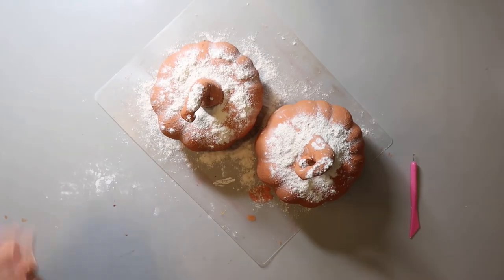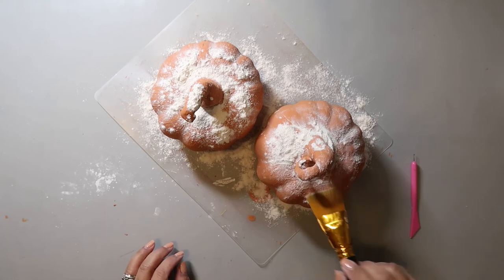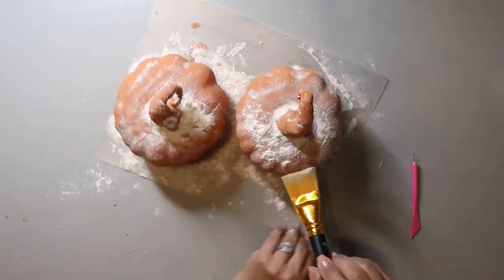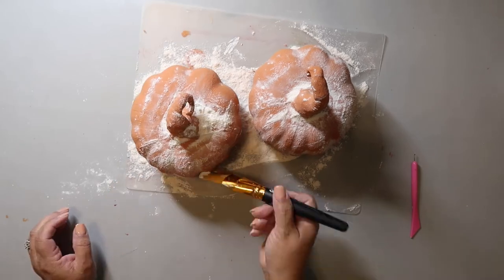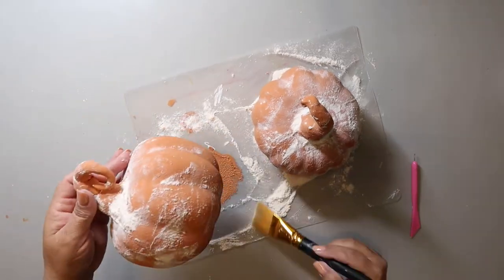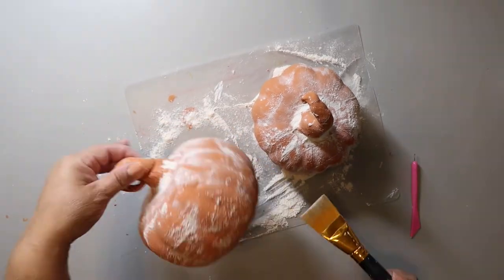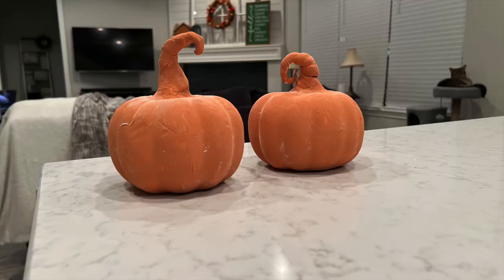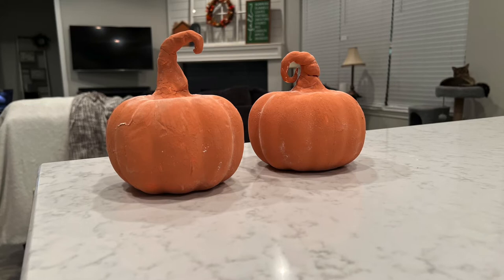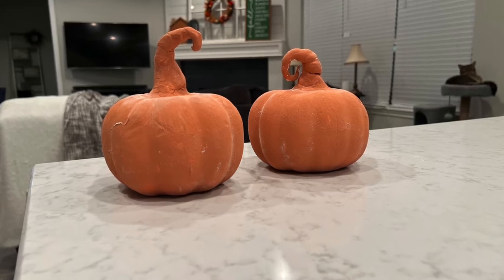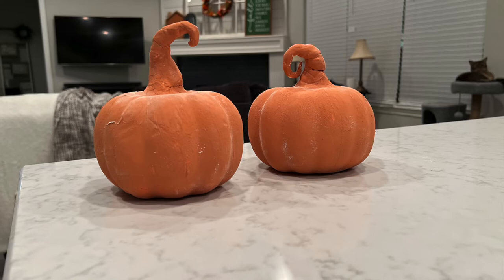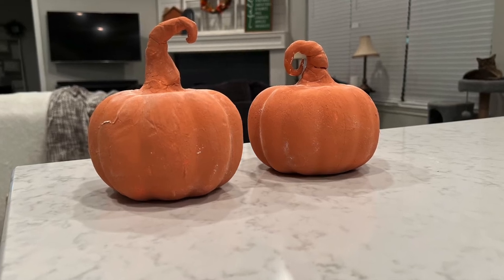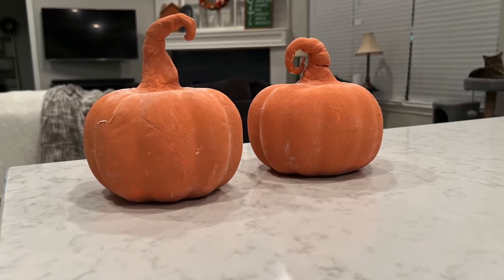Now I forgot to dust these when the paint was almost dry. That's what you're supposed to do. My pumpkins were pretty dry, so I don't think the flour, I used flour to dust them, I didn't think it stuck as well as it could have or maybe should have. But this is how they turned out. I may need to go back and do like a whitewash on them because they just don't look dusty enough. They don't have that white kind of coating on it. But let me know what you think and how you'd fix it.